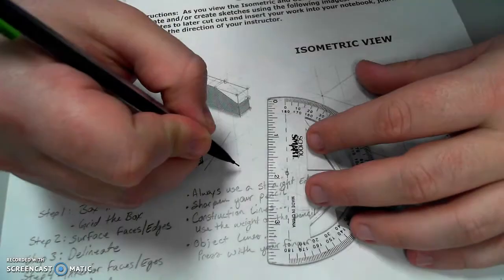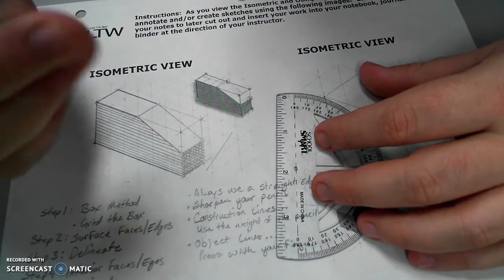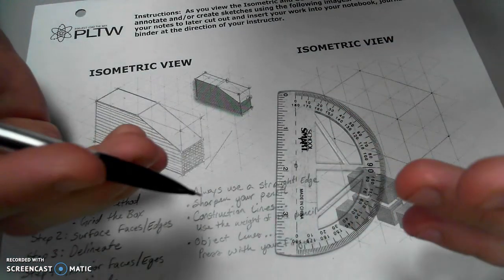Hopefully, at this point, you've learned that isometric means equal measure. Iso meaning equal, metric meaning measure.